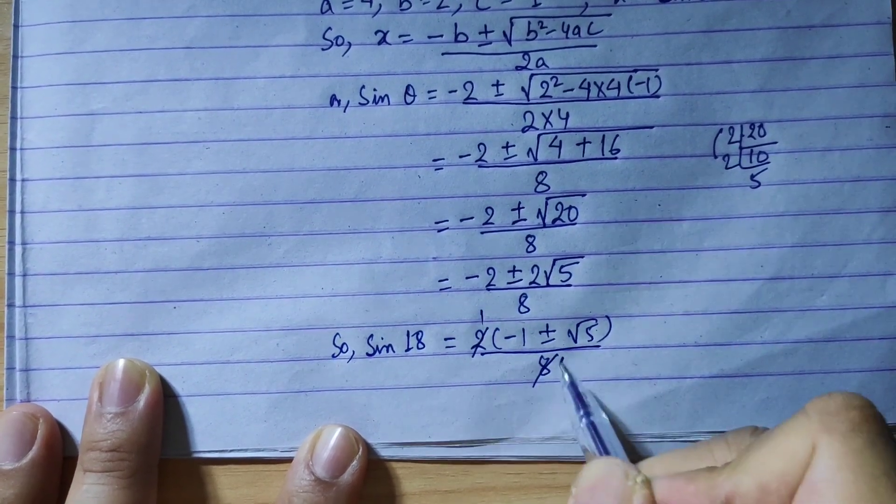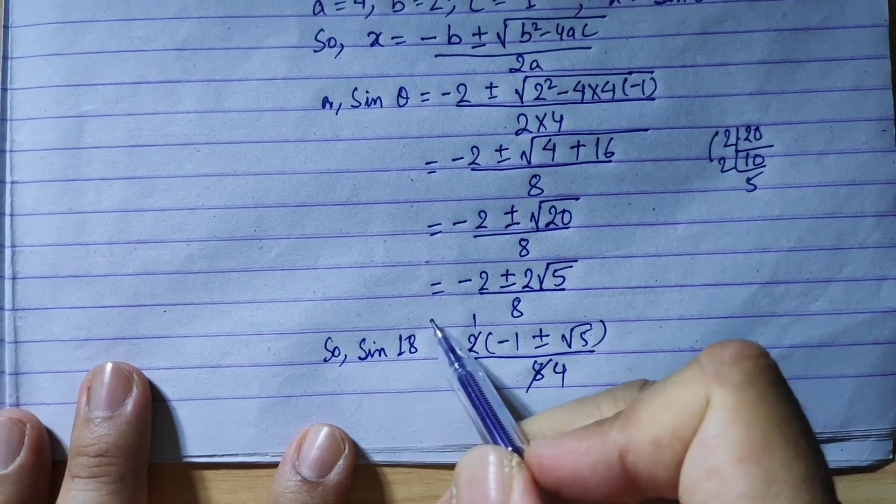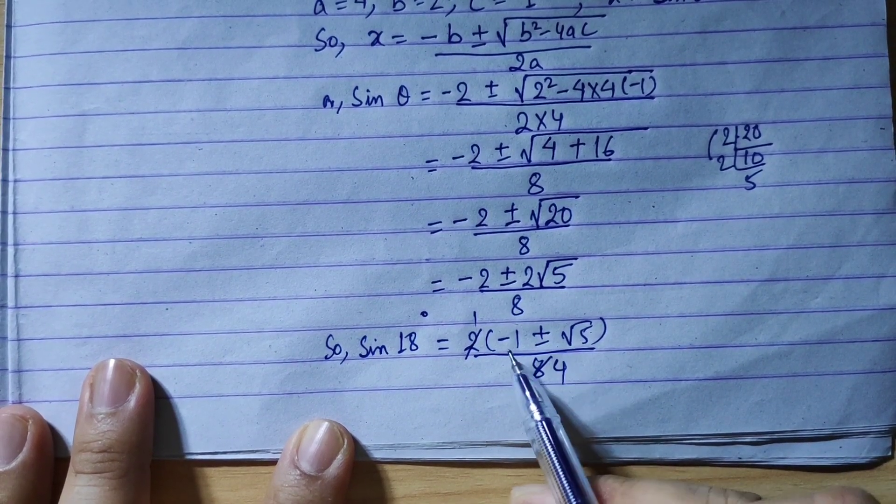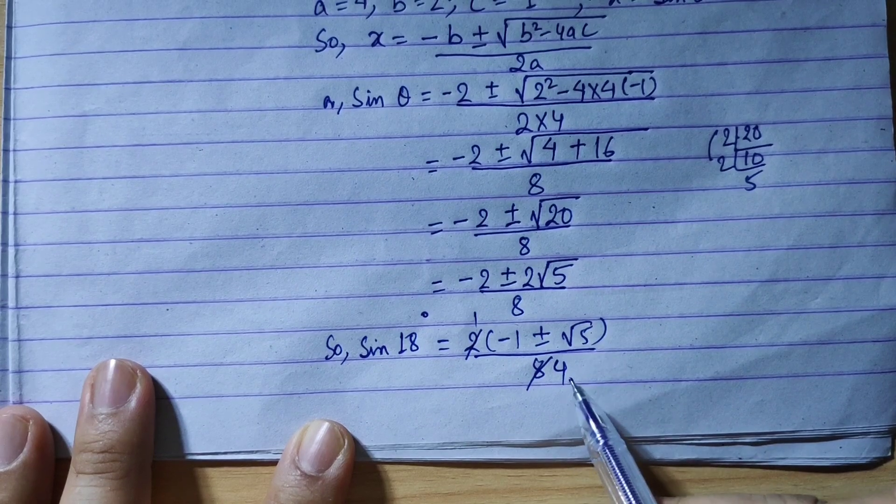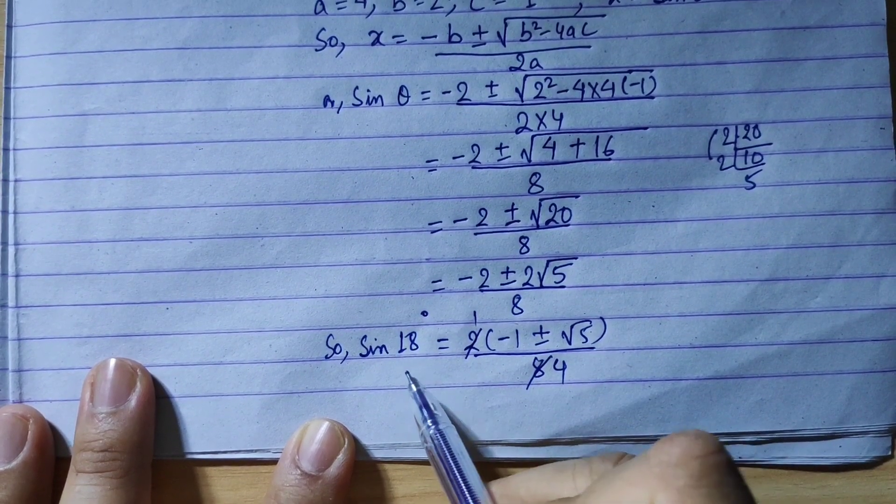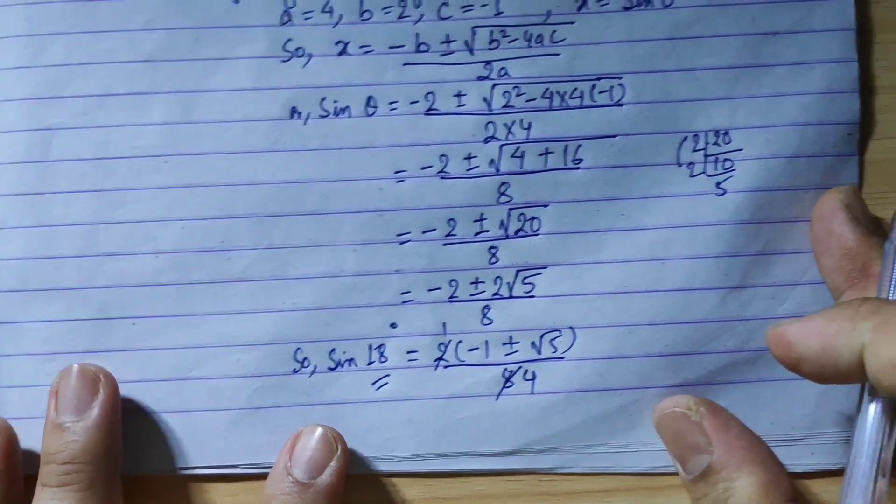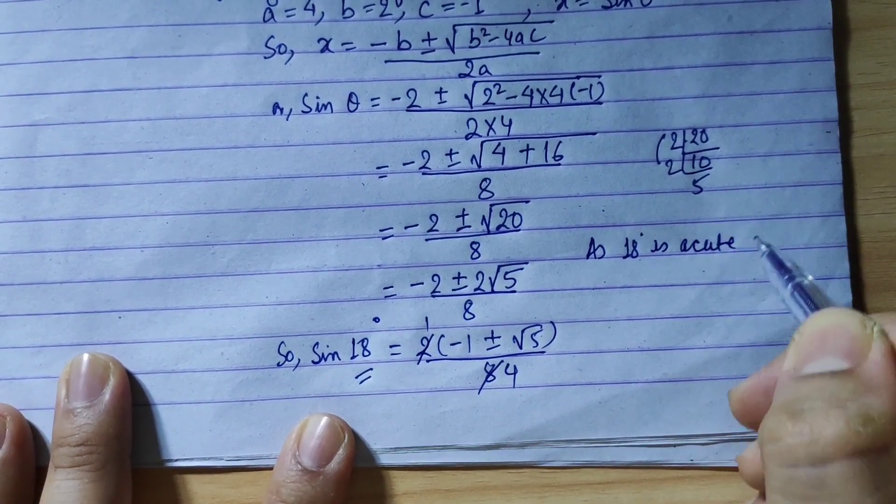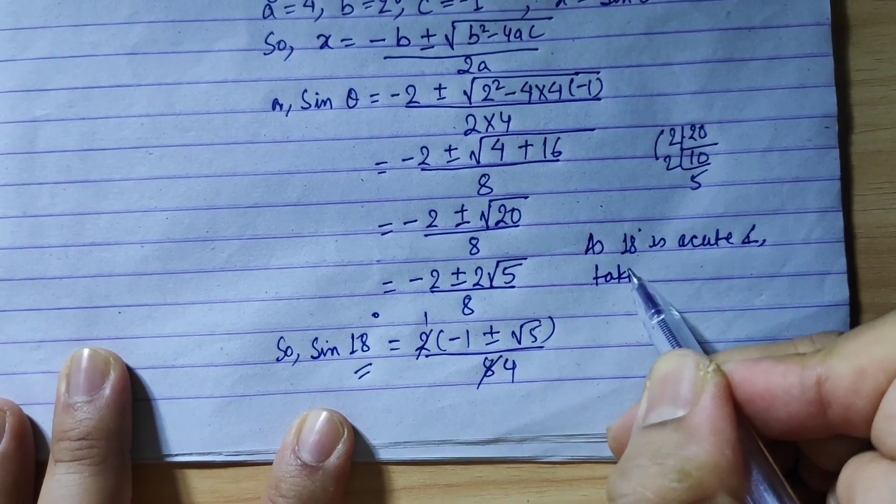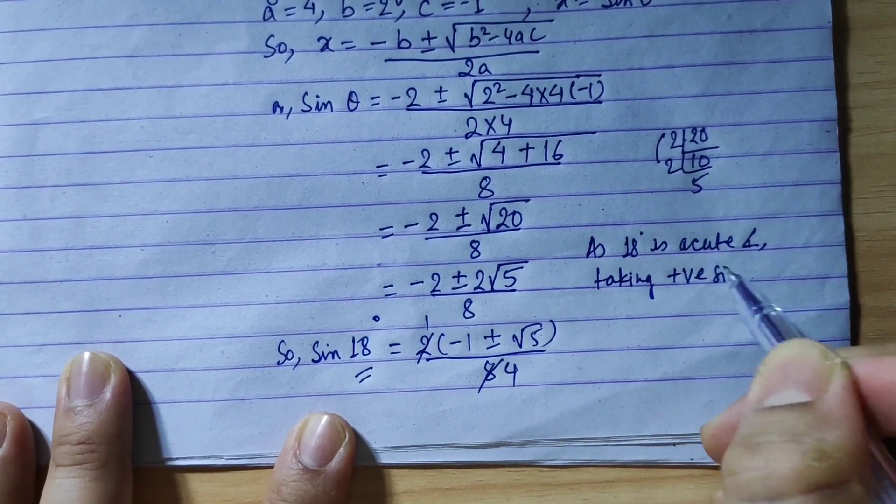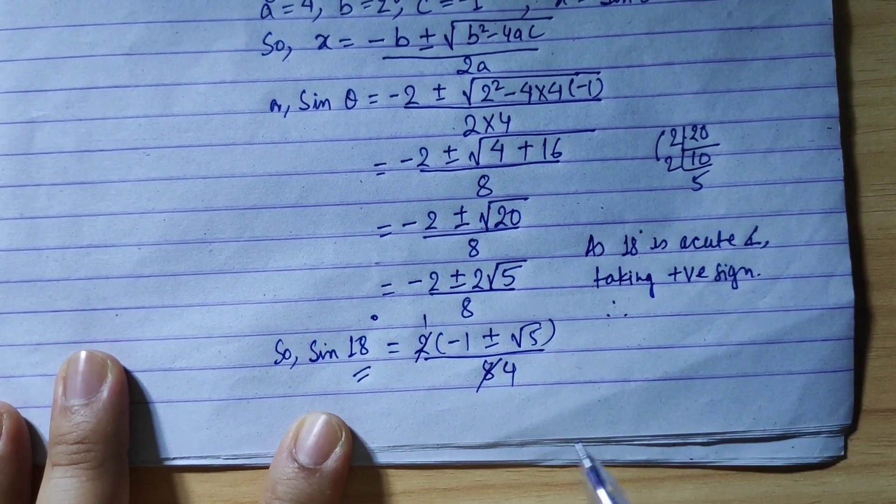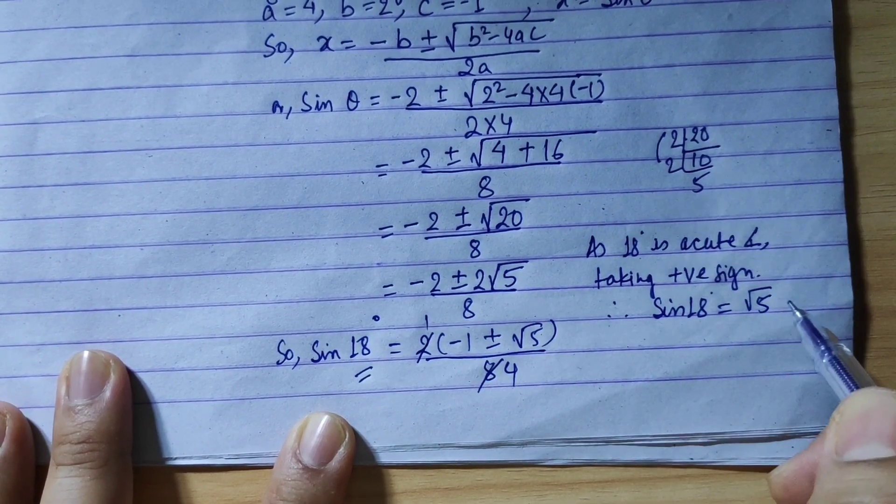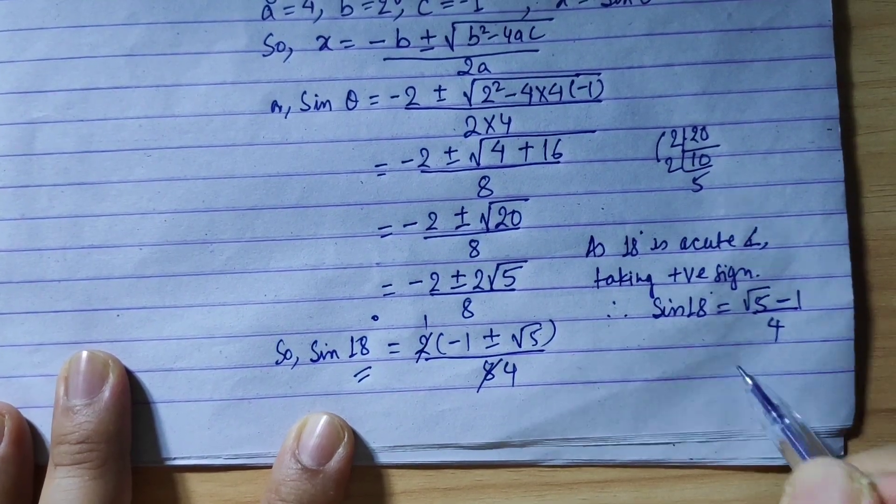We have sin 18. So sin 18 equals minus 1 plus minus root 5 upon 4. Taking the positive value of root 5 minus 1 by 4. Proved.